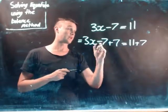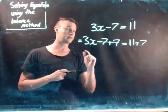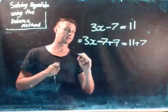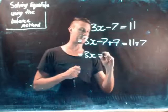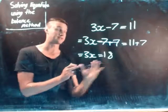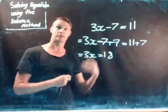Now we know that these will cancel each other out, so they'll be zero. So the next part we'll have is 3x equals, and 11 plus 7 is 18. So now if I balance it out again, now I need to go to the next step.